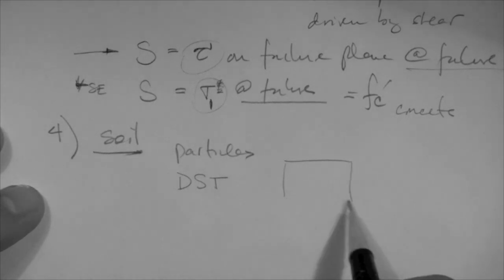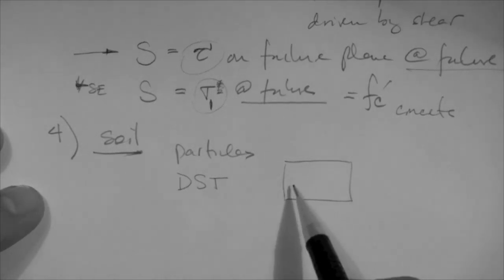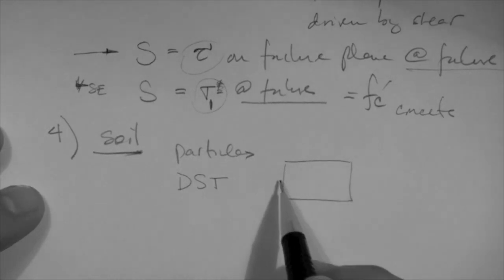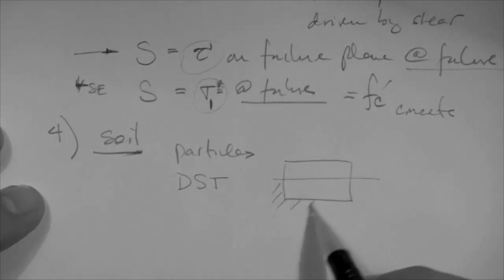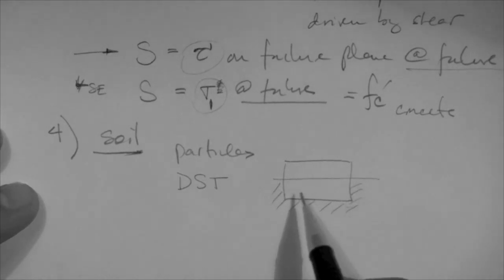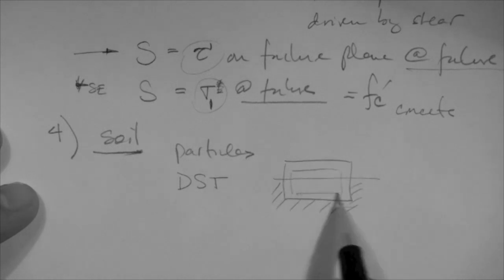In the direct shear test, what we do is take the soil, place it in a box that is split in half. We fix the bottom. There are different types of direct shear, but in one example, we fix the bottom. So, the soil is in here. This is the soil.